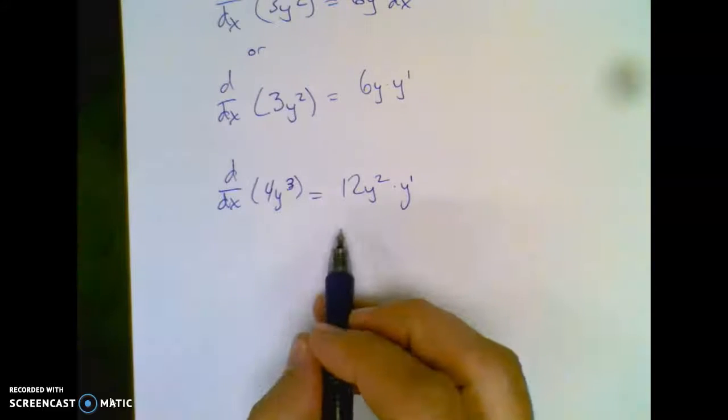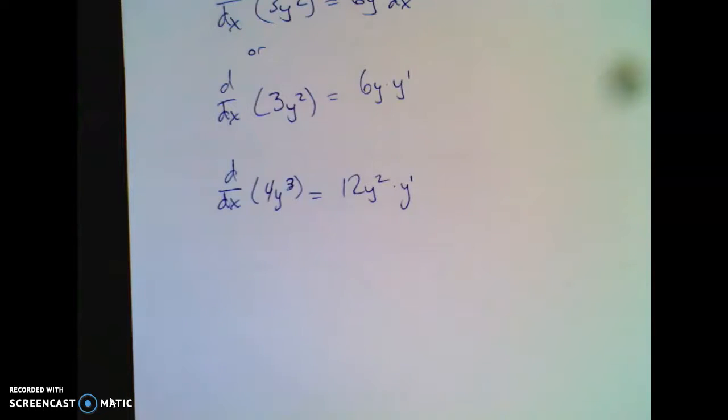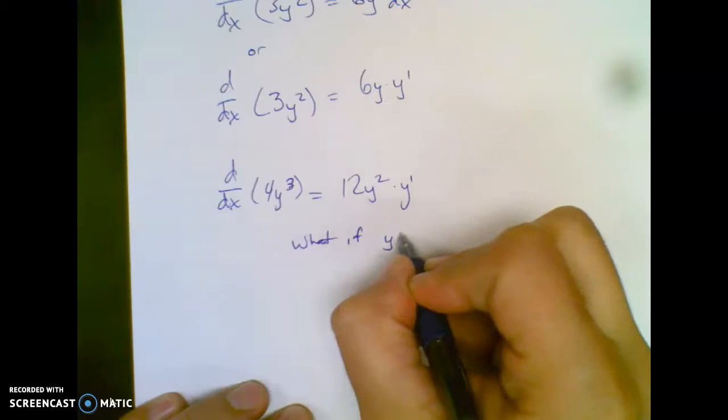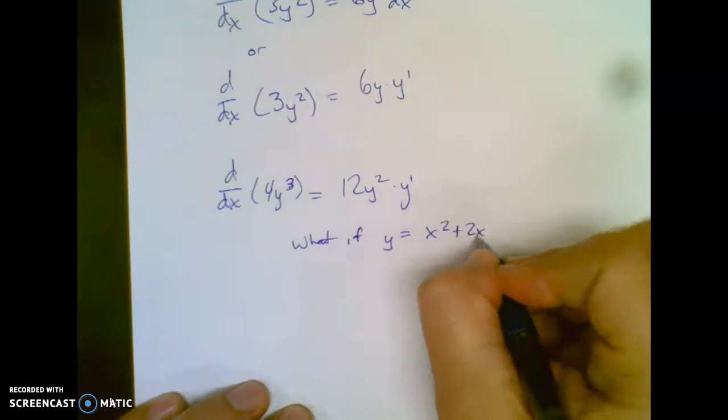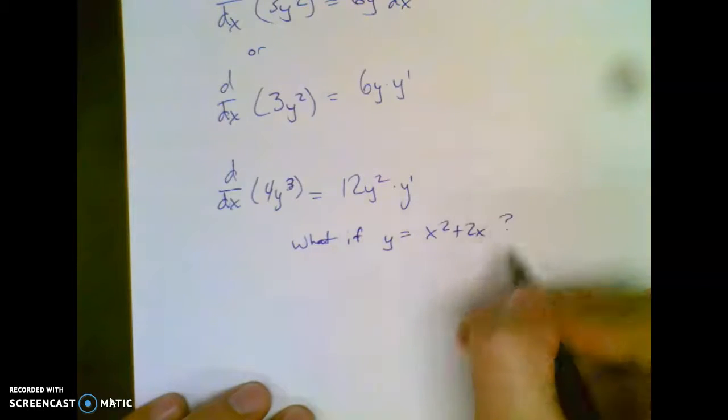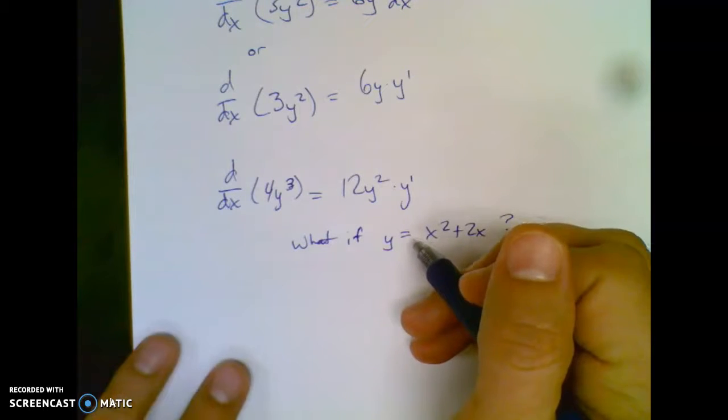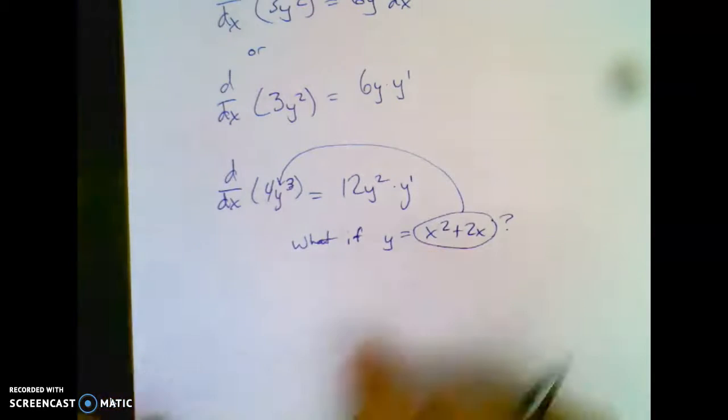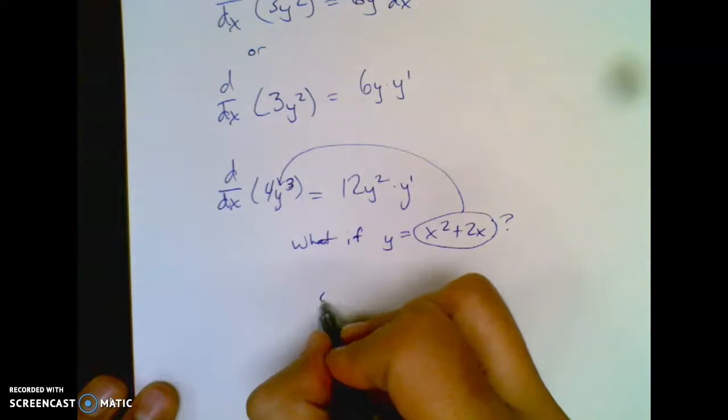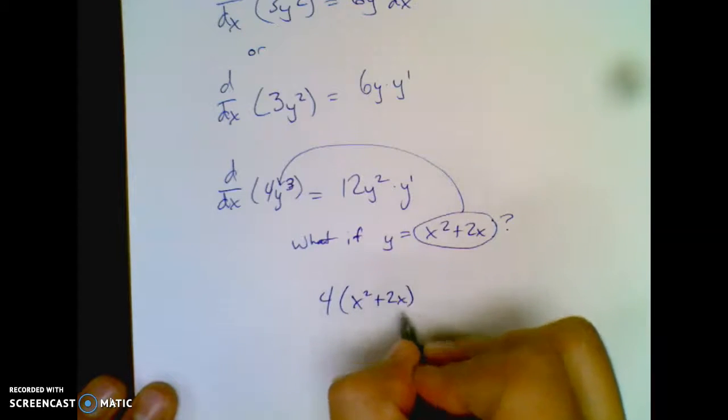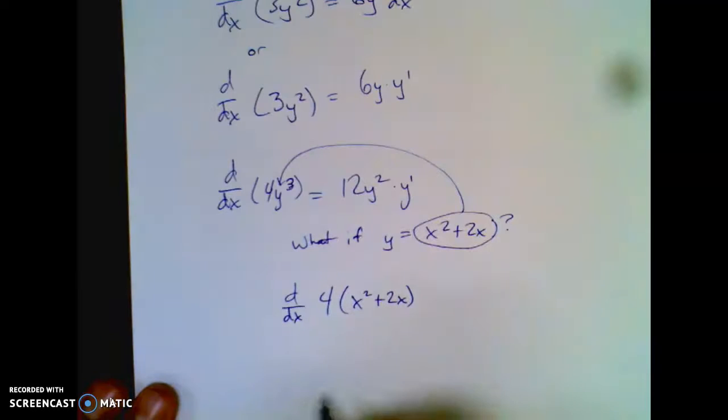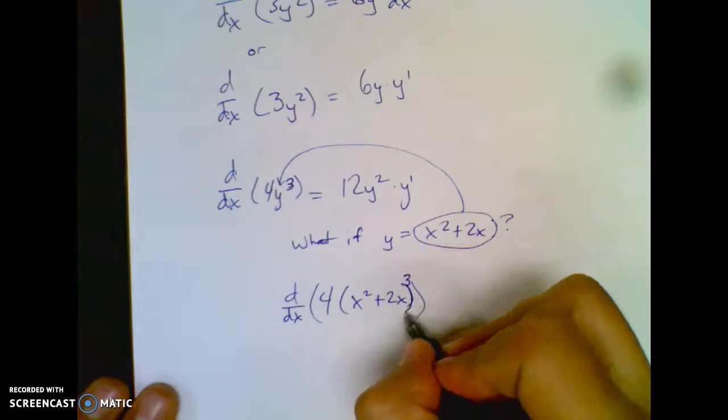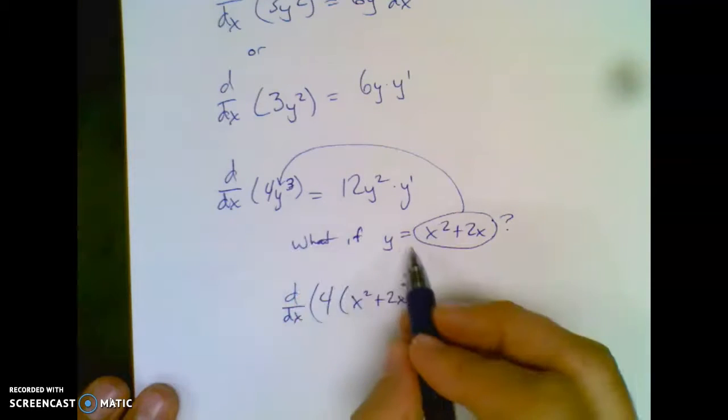Here's a question, and this is getting into where the chain rule even came from. What if I told you that y equaled x² plus 2x? What if y equaled x² plus 2x, and I wrote the original problem with this thing in instead of y? Because we oftentimes know what y equals. So if I rewrote that problem as 4 times (x² + 2x)³, and then I asked you to take the derivative of it, I'm going to take the derivative of this thing. Oh wait, there's a cube there I missed. So instead of 4y³, it's 4 times this thing cubed.